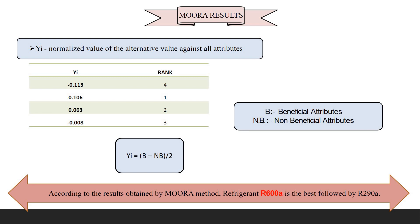Beneficial attributes are properties whose higher values are desirable, also called positive attributes. Non-beneficial attributes are those whose smaller values are preferable, also called negative criteria or non-beneficial attributes.